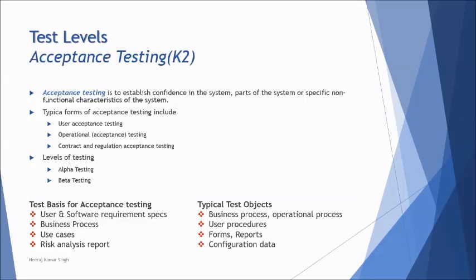At the end, we have acceptance testing. Once system testing and other non-functional levels have been conducted, the system is declared ready for the client to accept. Acceptance testing is generally performed by the client before accepting the software. As per ISTQB, the client comes to the developer premises and conducts a level of testing before accepting the application — that is what we call acceptance testing.